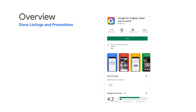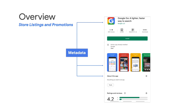To start with, an app's metadata consists of the app's icon, title, developer name, description, screenshots, and promotional images. Think of this as information that gives users a first impression of your app, so it must be accurate and well-organized.